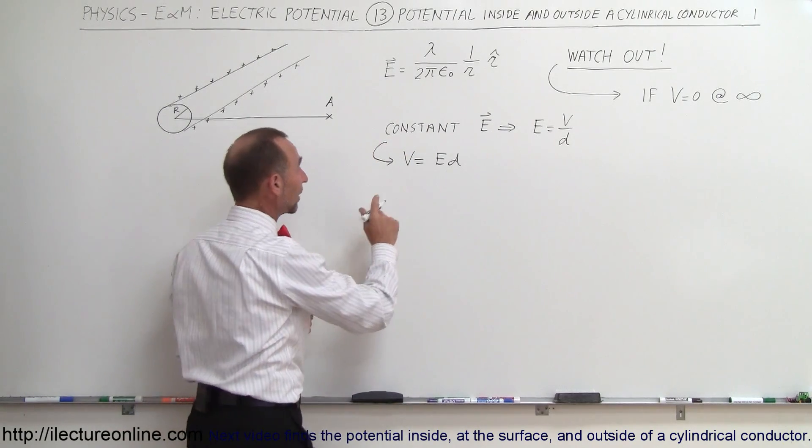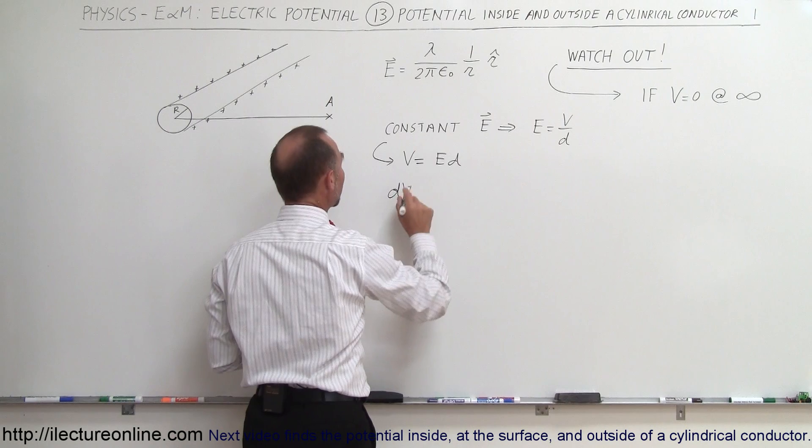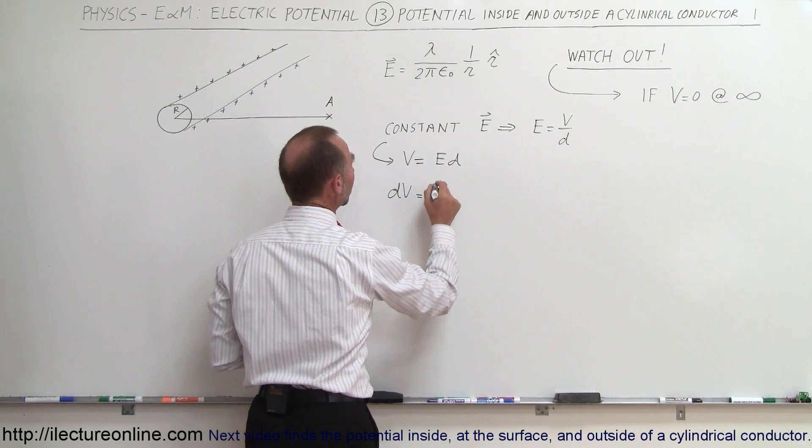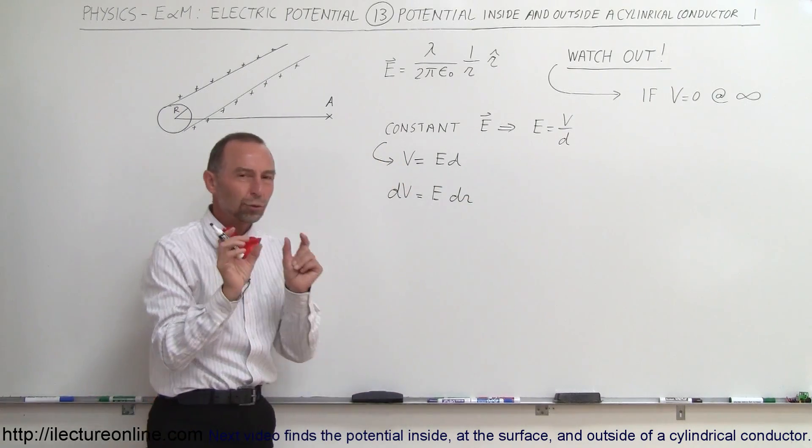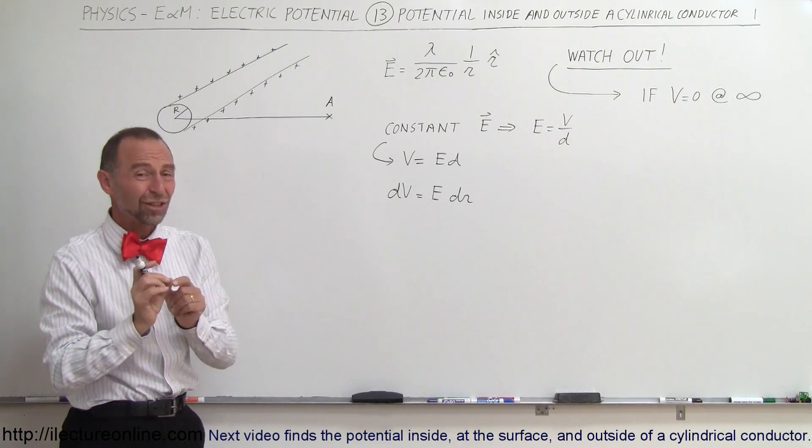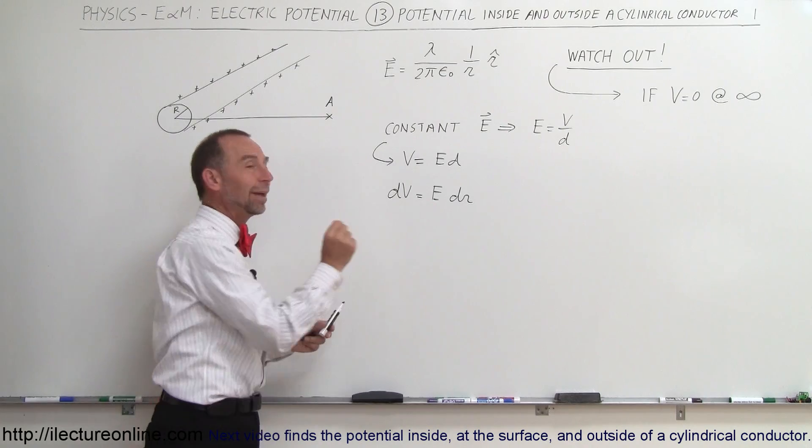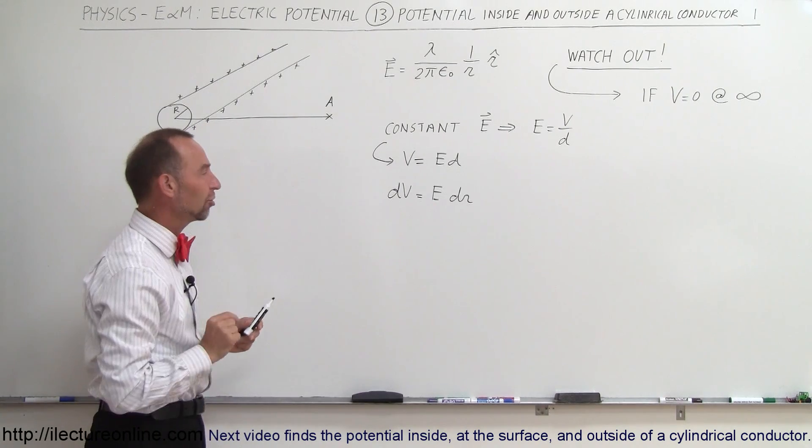And for a non-constant electric field, we write it as a differential. We write it as dV, a change in the potential is equal to the electric field at that location times the change in distance dr. And of course, if we do it over a very small distance dr, then E will be basically constant for that very small change in the distance.